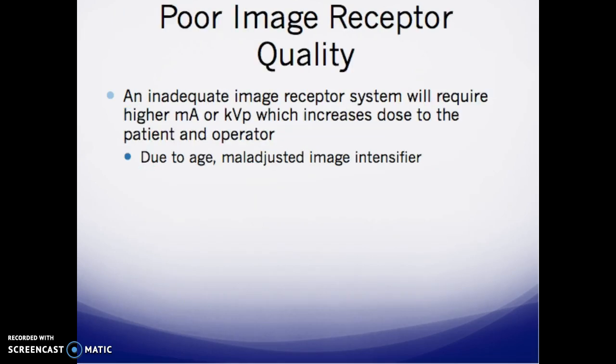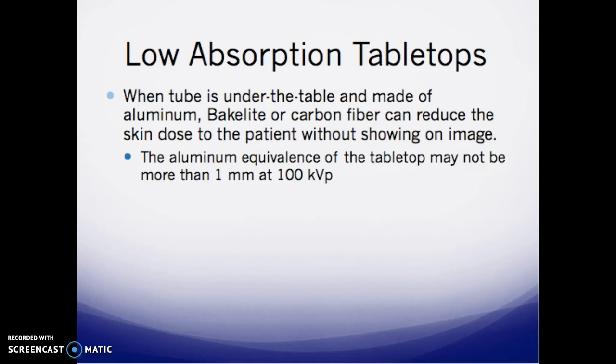Poor image receptor quality: an inadequate image receptor system requires higher MA and KVP, which increases patient dose. This occurs due to age and malalignment of the image intensifier. Low-absorption tabletops — made of aluminum or carbon fiber when the tube is under the table — can reduce skin dose to the patient without affecting image quality. The aluminum equivalence of a tabletop may not exceed 1 millimeter at 100 kVp.